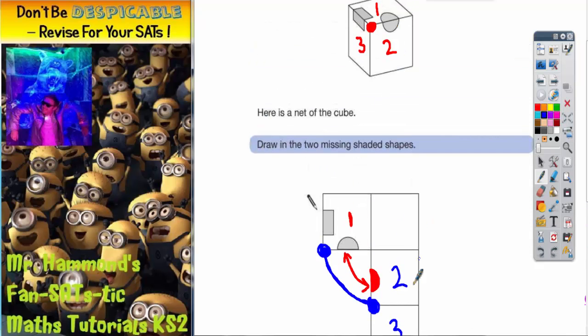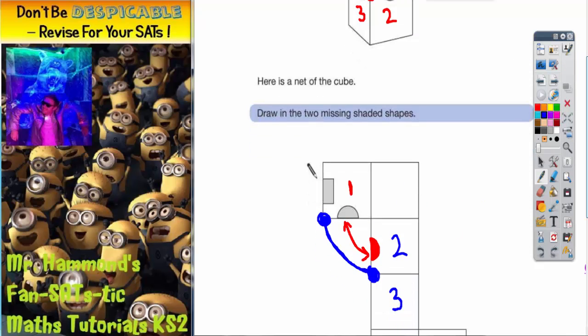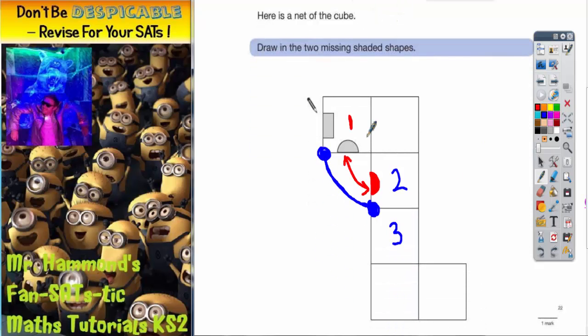One, two, three. One, two, three. So when we fold our net together, this edge here is going to come down and meet this edge here. And that means that we can draw in the other half of our square on this face here. And there we go. We've completed our net.